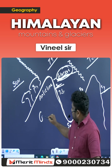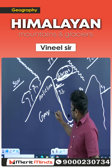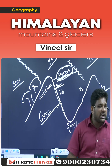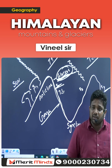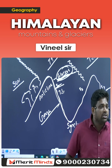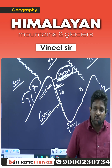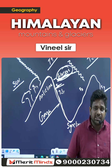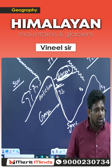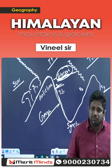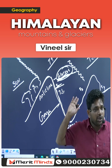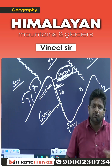Rivers like the Ganga — Ganga starts from which glacier? Gangotri Glacier. Yamuna River starts from which glacier? Yamunotri Glacier. Brahmaputra River starts from which glacier? Chamuyangdang Glacier.